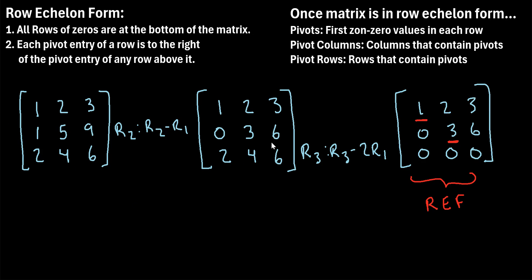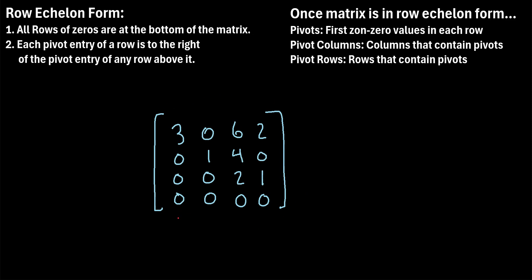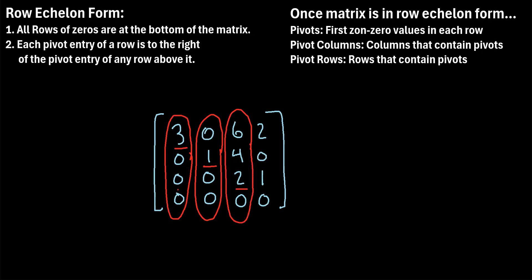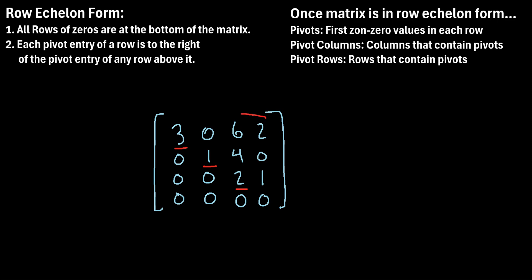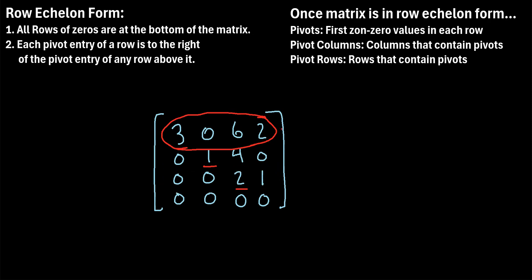Let's look at another example. We have another matrix that's already in row echelon form, and we want to find the pivots, pivot columns, and pivot rows. The pivots are the first non-zero values in each row. In the first row, the pivot is this three. In the second row, the pivot is the one. In the third row, here's the pivot — the first non-zero value. In the last row there are no non-zero values, so there are no pivots. So we have three pivots. The pivot columns are the first, second, and third columns, and the pivot rows are the first, second, and third rows.